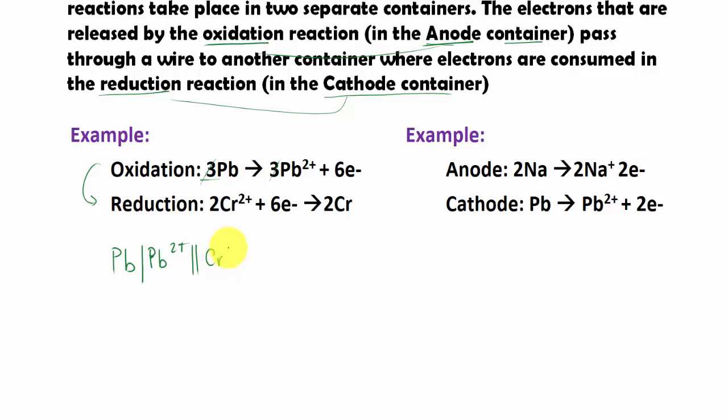In this case, we have Cr as in aqueous, separated by a vertical line. We have Cr solid. And that's all we have to do.